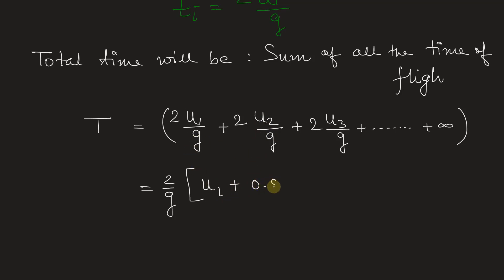So let's write here 0.8 times u1 plus now u3 is 0.8 times u2. So this will be 0.8 times u2 and u2 we know is 0.8 times u1.